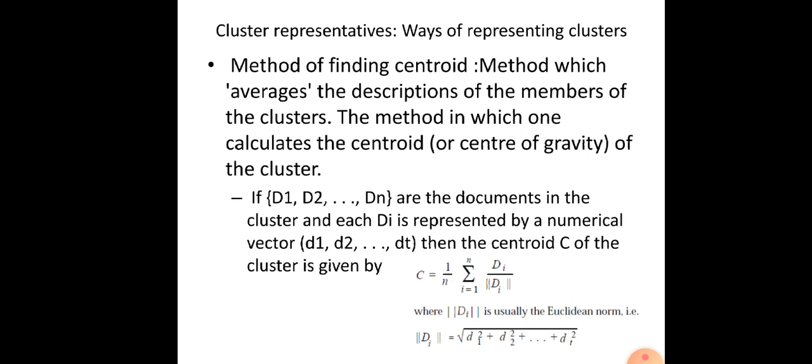Now we need to discuss the method of finding the centroid. The centroid of a cluster is its center of gravity, so this method averages the descriptions of the members of the cluster. Here we are using d1 to dn as our documents in the cluster, and each di is represented by a numerical vector d1, d2 up to dt. The centroid c of the cluster is given by this equation.